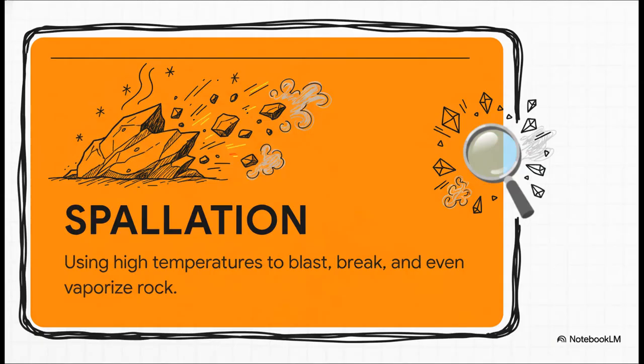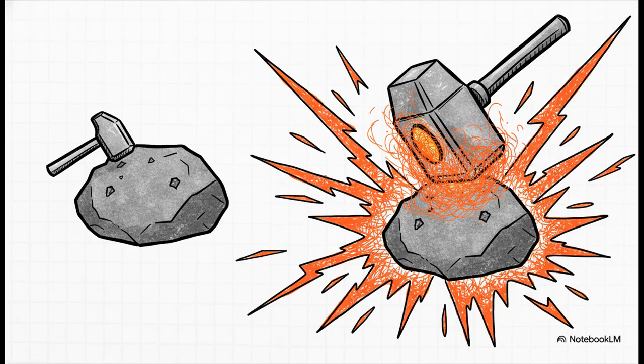So how does it work? The science is called spallation, and it's actually pretty simple in principle. You blast the surface of the rock with incredibly intense, rapid heat. This creates a thermal shock so severe that fragments of the rock just flake off, break, or even turn straight into vapor. It literally clears a path. And the numbers they're throwing around are insane. They're claiming it's 100 times faster and 98% cheaper.